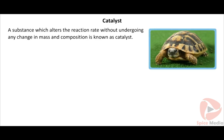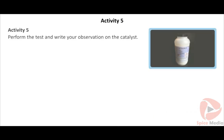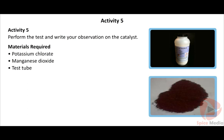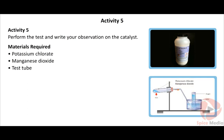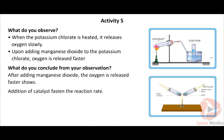A substance which alters the reaction rate without undergoing any change in mass and composition is known as a catalyst. Activity 5: Perform the test and write your observation on the catalyst. Materials required: potassium chlorate, manganese dioxide, test tube. Procedure: Take a small amount of potassium chlorate in a test tube and heat it — it releases oxygen slowly. Then add a small amount of manganese dioxide. Oxygen is released faster. Conclusion: Addition of manganese dioxide as a catalyst increases the reaction rate.